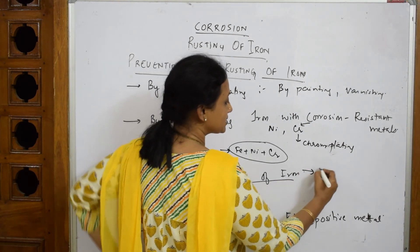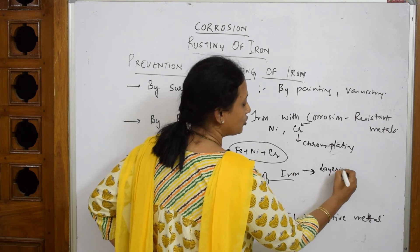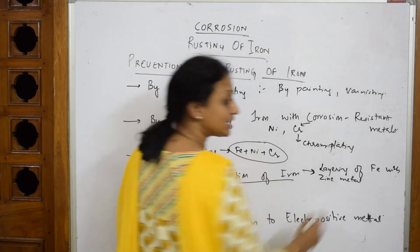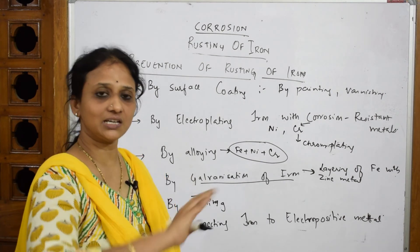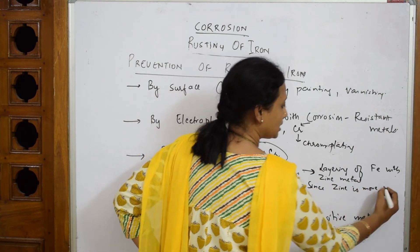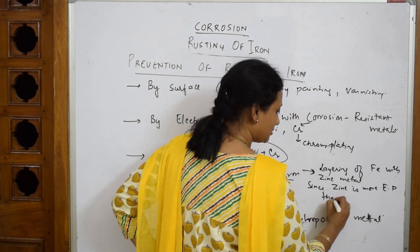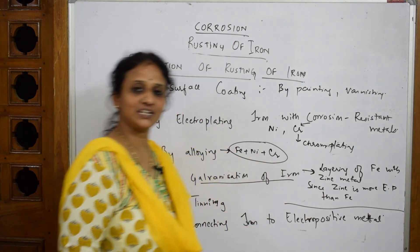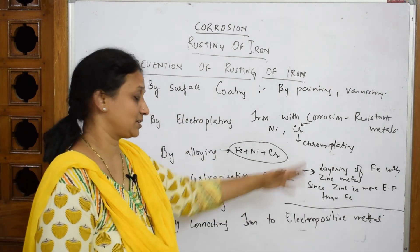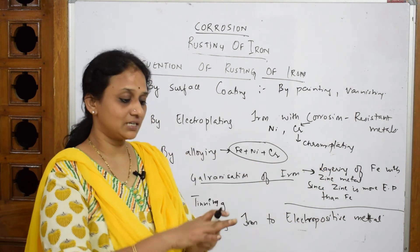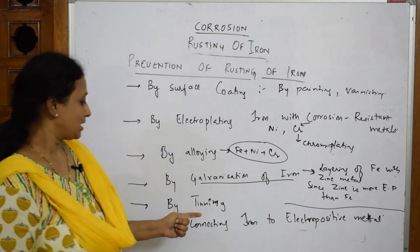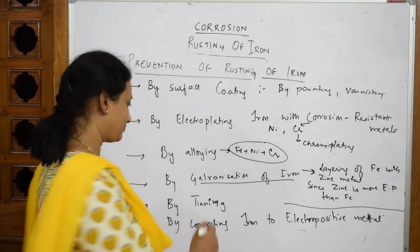Galvanization is the layering of iron with zinc metal. Because zinc is more electropositive than iron — E° for zinc is about 0.76 V compared to 0.44 V for iron — a thin layer of zinc is coated on the iron surface, further protecting it from corrosion.